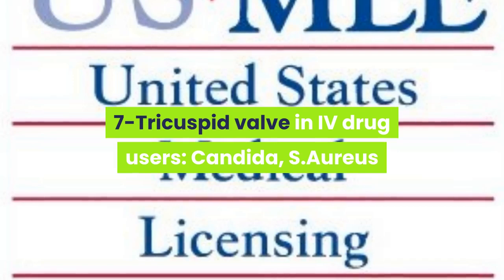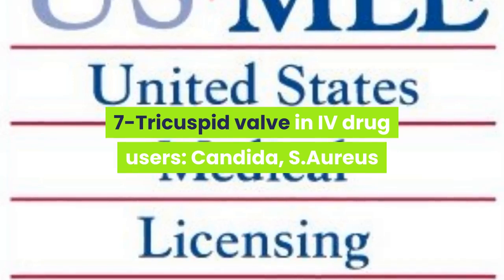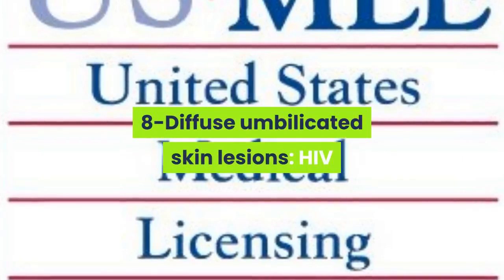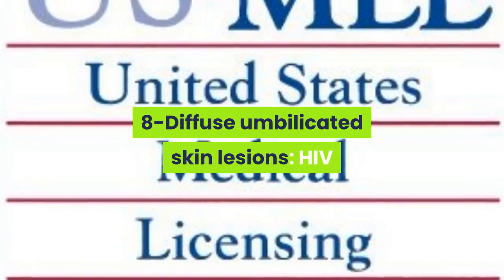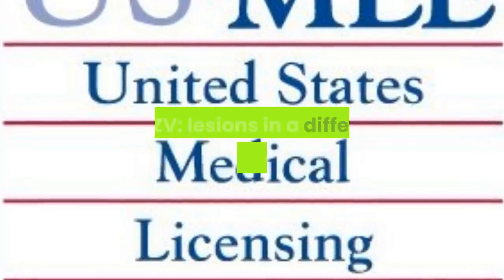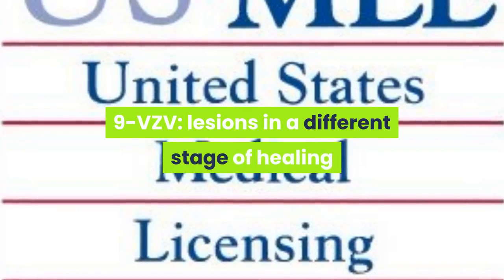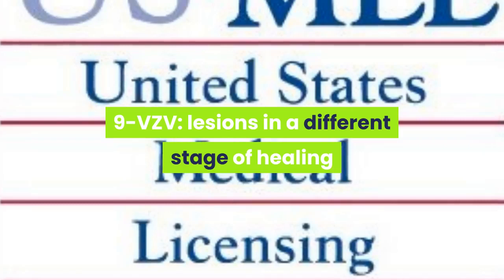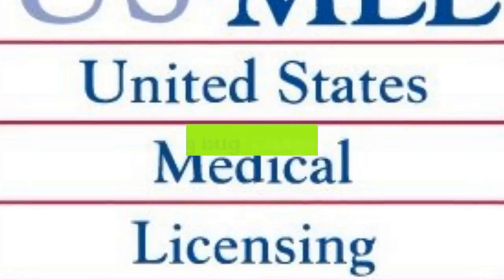Rhinovirus is going to be a buzzword for tricuspid valve disorders in IV drug users. Diffuse umbilicated skin lesions — you want to point out candida and staph aureus. Diffuse umbilicated skin lesions should also point you to HIV (human immunodeficiency virus).